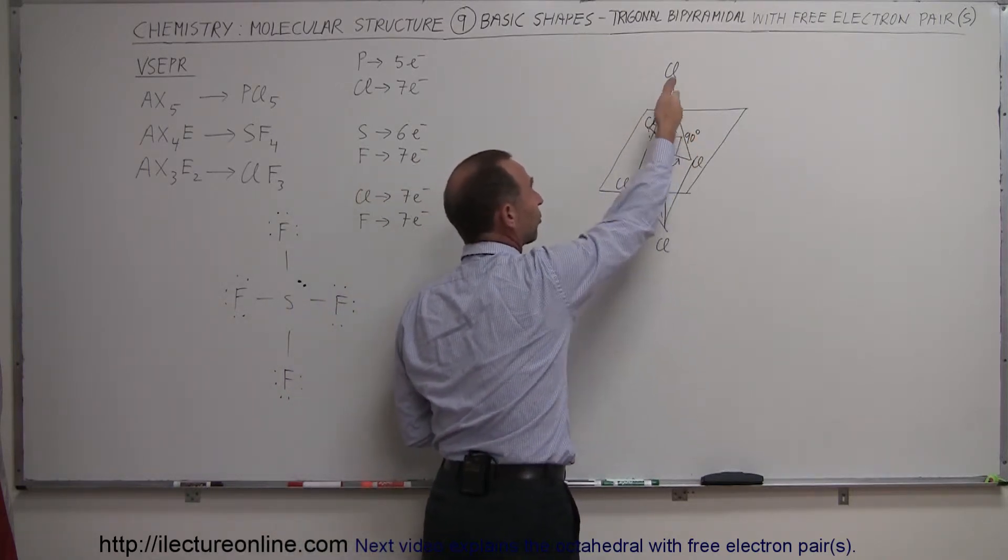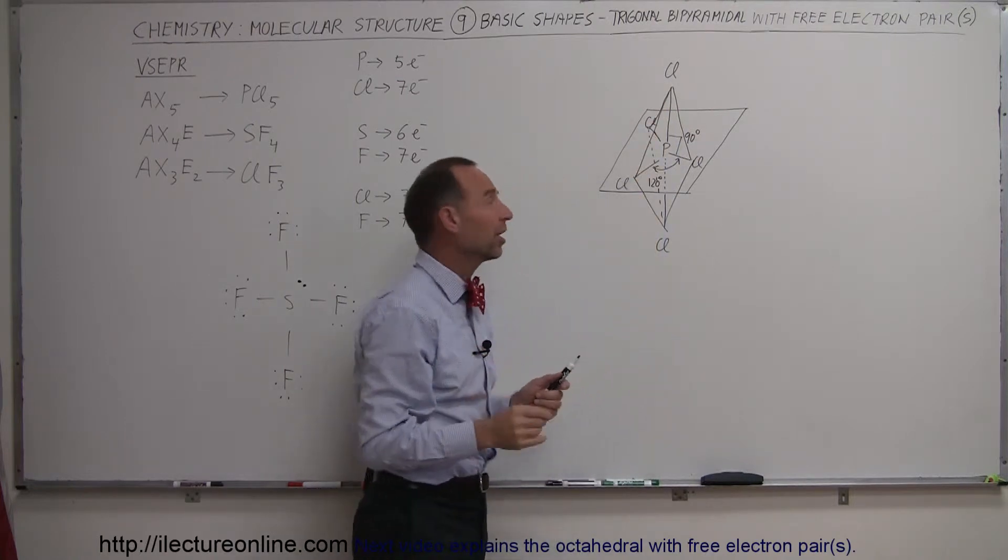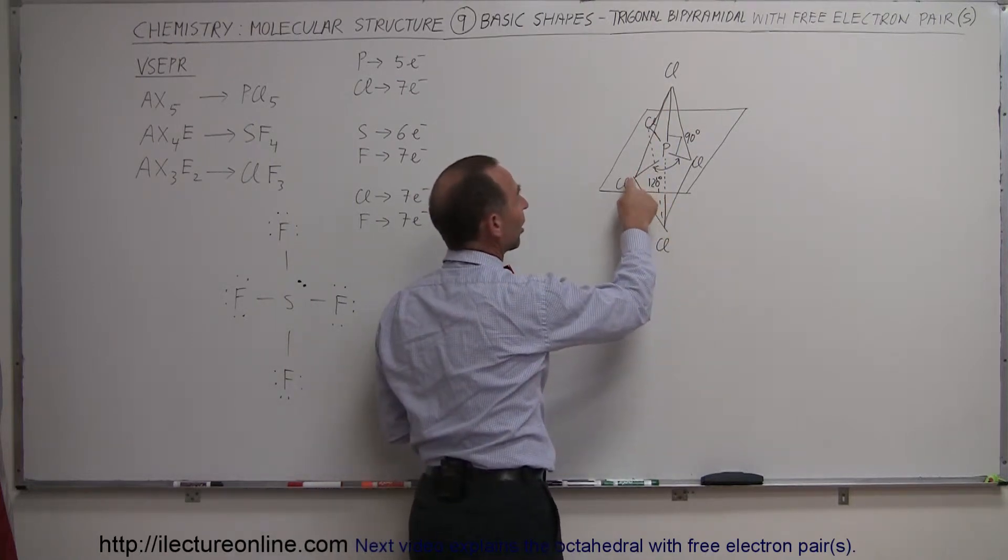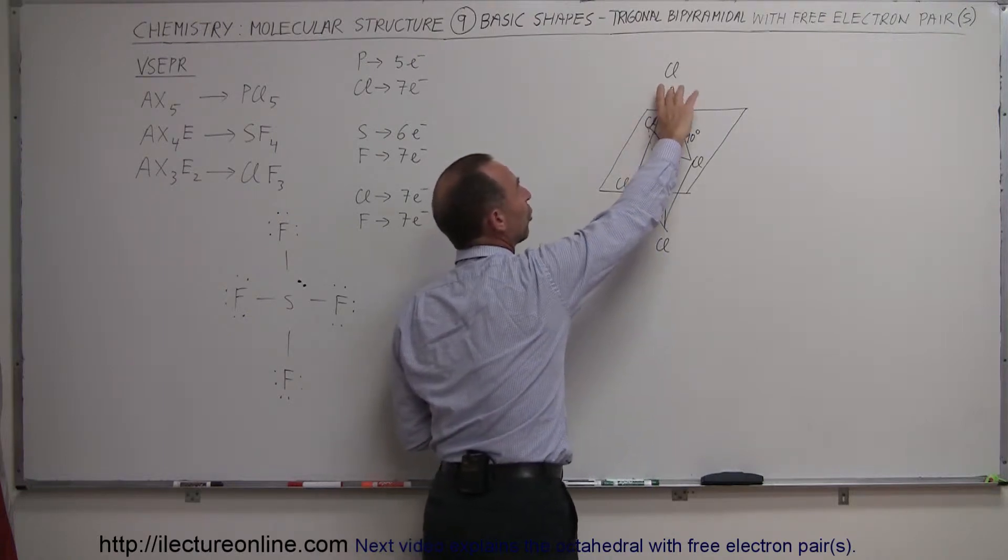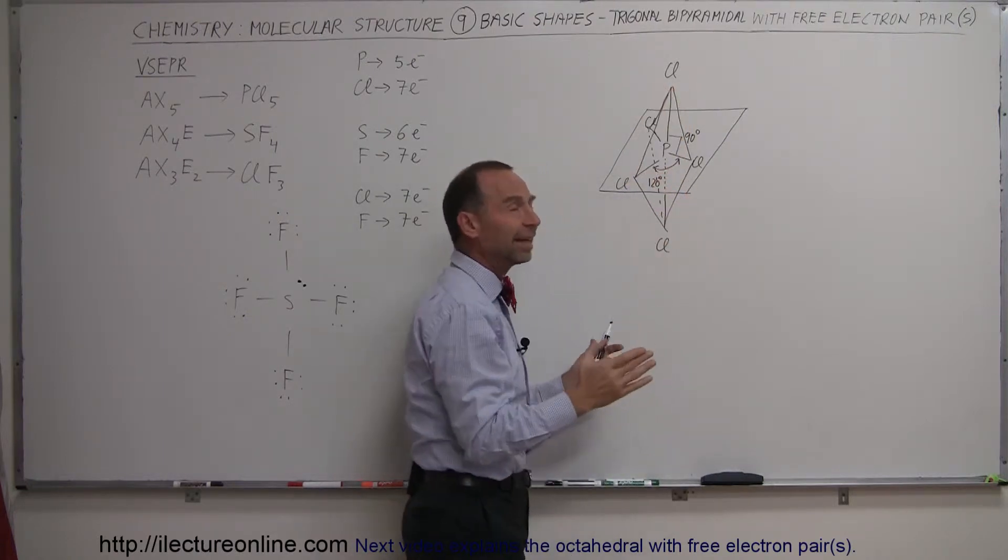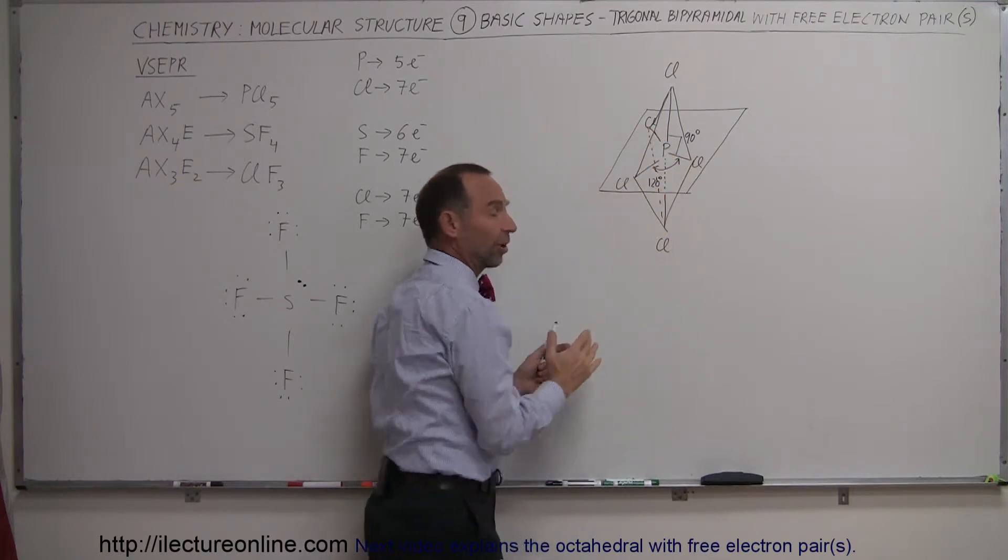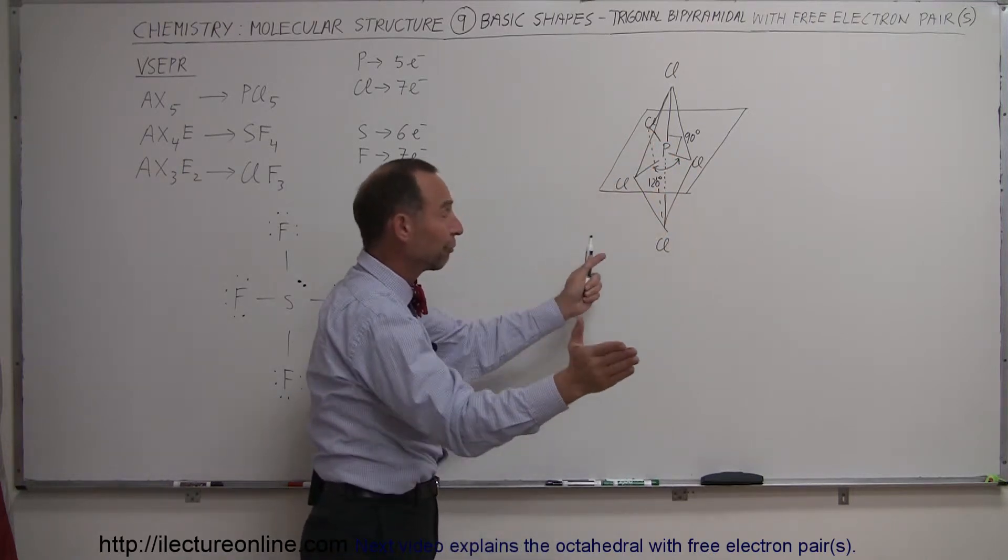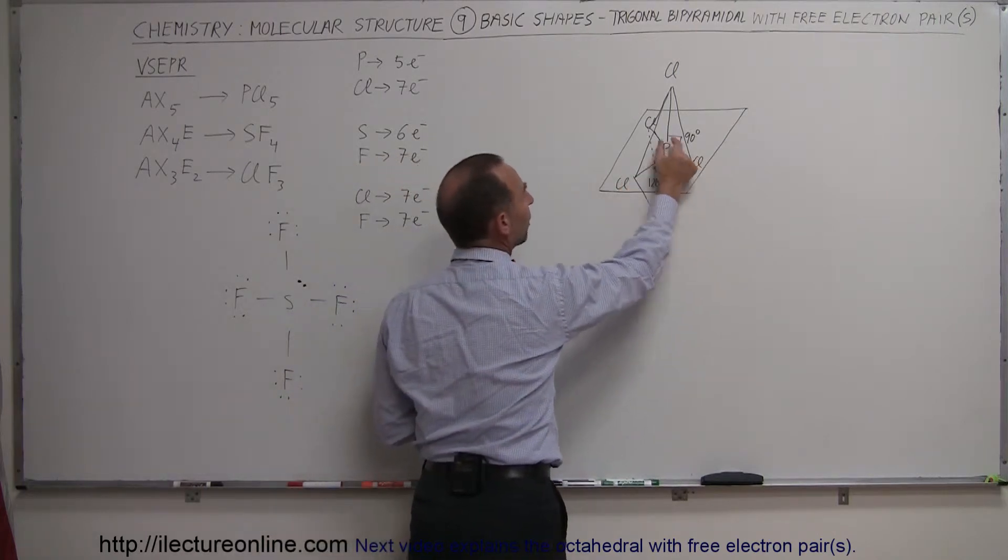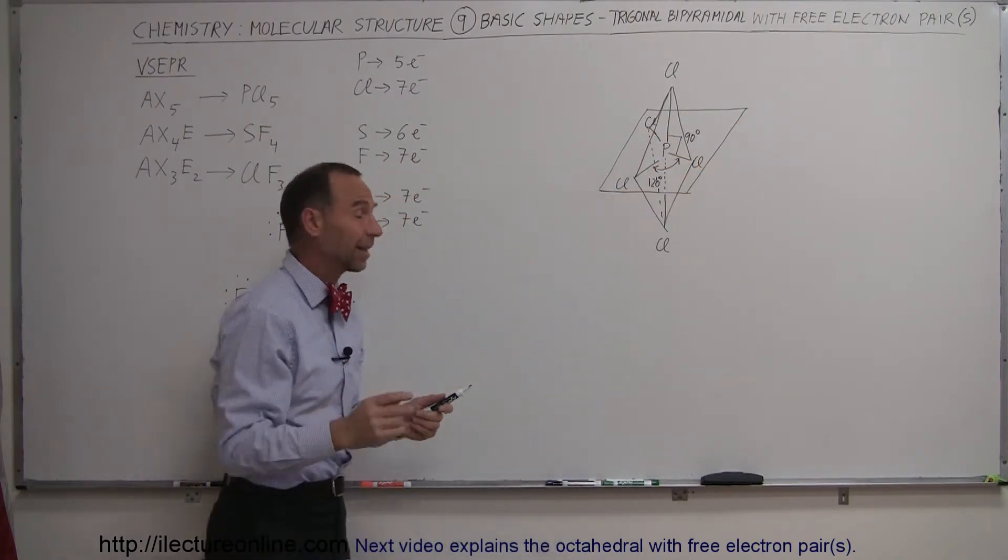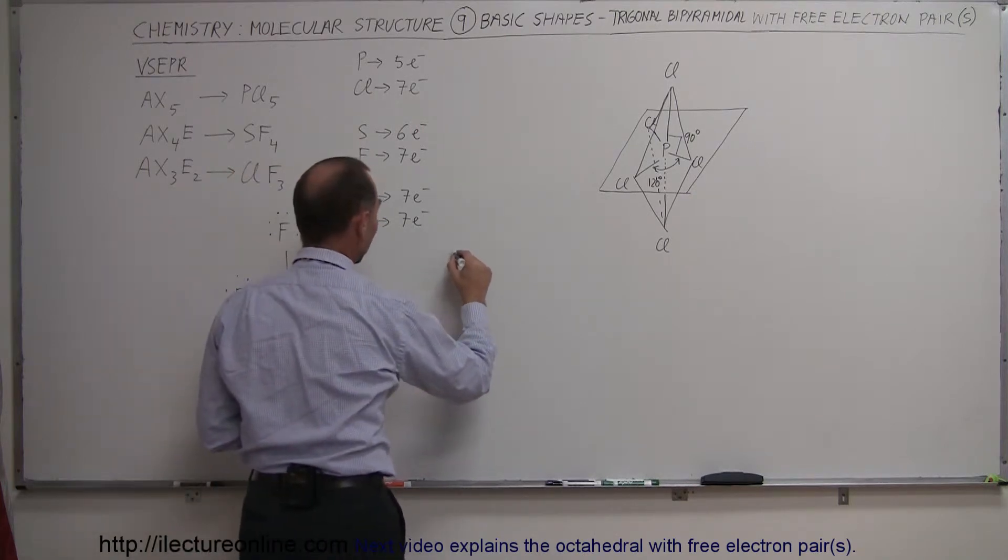If you place the free electron pair over here, it would only have two, one up here and one up here, that's at 90 degrees. The other two would be starting out at 120 degrees further away, much less a repulsive force. So it's much more likely that the free electron pair will be in one of these three positions, and that's exactly what's going to happen.